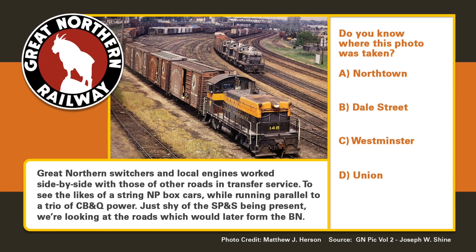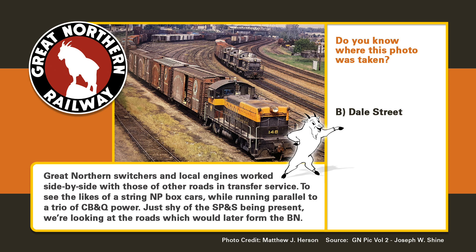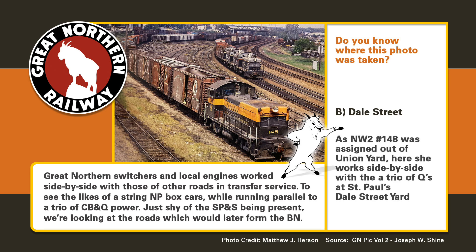It's time to find out how well you know the locations of the GN. If you said B, Dale Street, you'd be correct. As we view a slew of NW2s, you'll see NW2 148 was assigned out of Union Yard. Here it works side by side with a trio of QNW2s at St. Paul's Dale Street Yard. If you had guessed A, North Town, that was the former Northern Pacific Yard, which is actually still used by the BNSF today. If you guessed C, Westminster, that was a tower that had a similar S-curve look near it, but that is not this location. And if you had guessed D, Union, that was a former Great Northern yard — and that yard was huge.